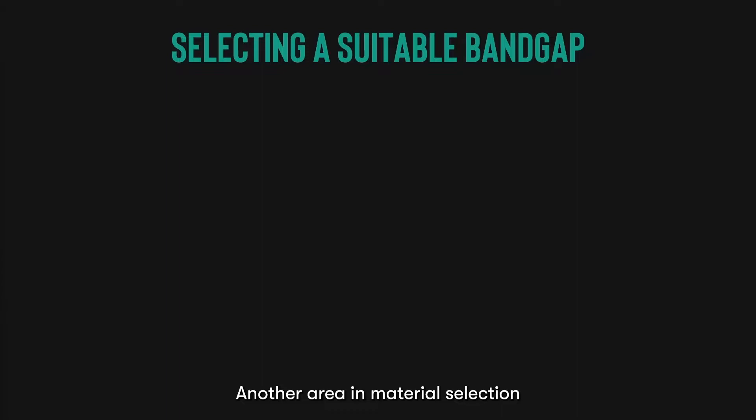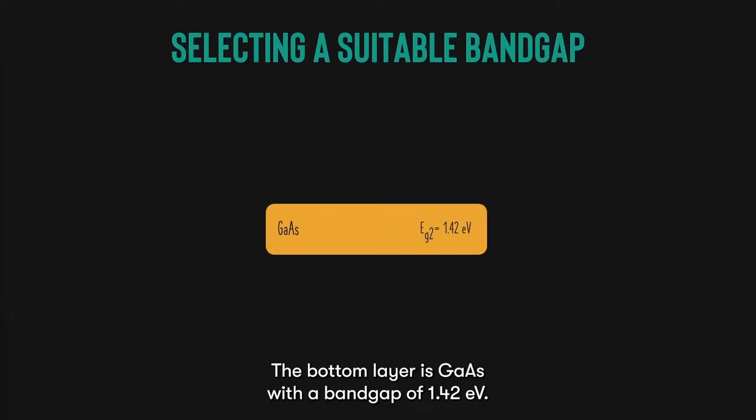Another area in material selection is to select a material with a suitable energy bandgap. Let's start with a very simple example. Say I wish to create a two-junction solar cell. The bottom layer is gallium arsenide with a bandgap of 1.42 eV. The question is, what is the optimal bandgap to be selected for the top layer?